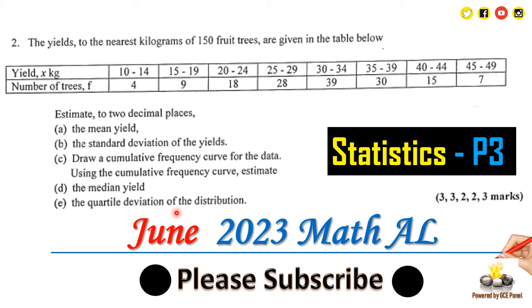Using this cumulative frequency curve, estimate the median yield and the quartile deviation of the distribution. So we need to look for the mean, to two decimal places, the standard deviation, and the cumulative frequency curve, which we're going to use to get the median and the quartile deviation.